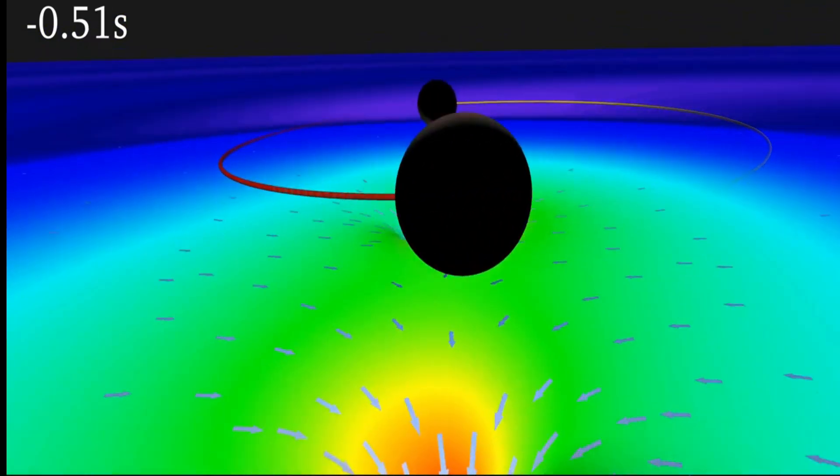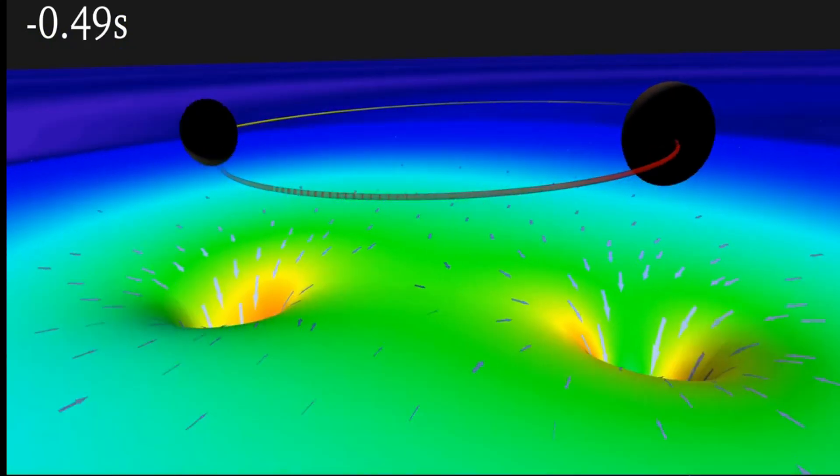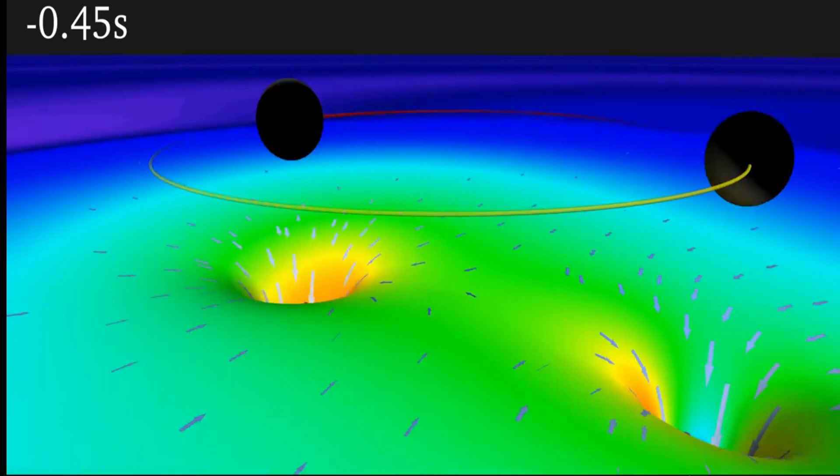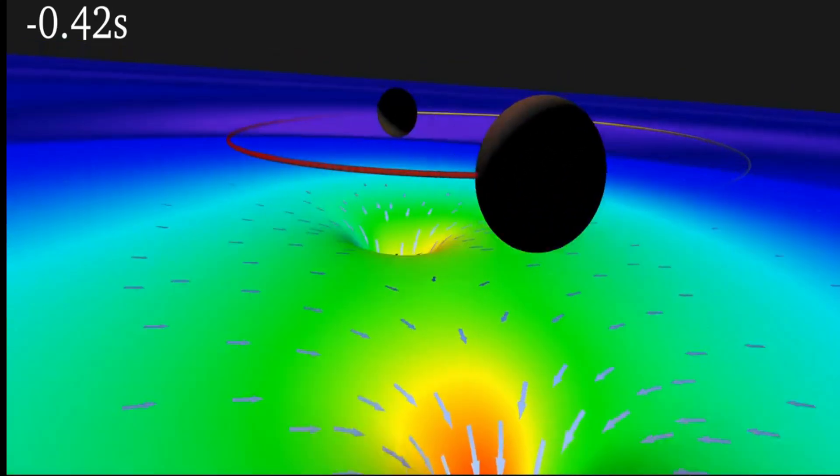Gravitational waves are ripples in the shape of space and flow of time. Around each black hole, space bends downward in a funnel shape, a warping produced by the black hole's huge mass.